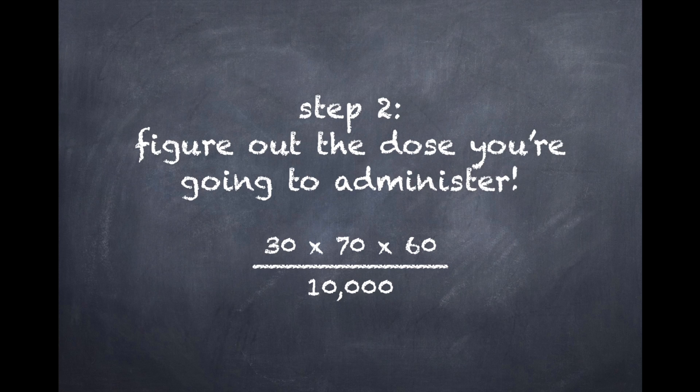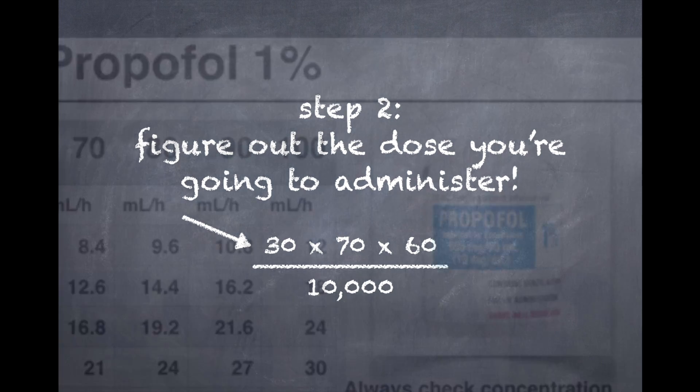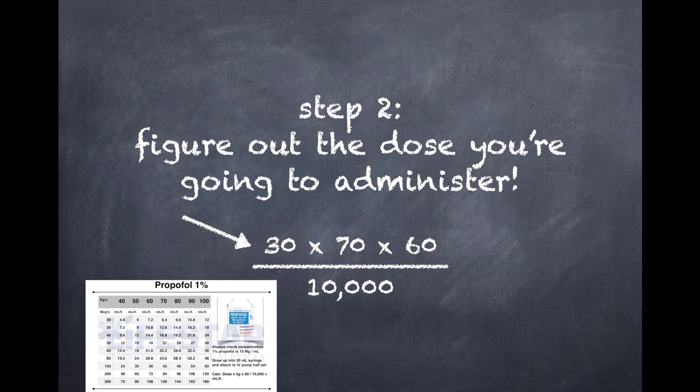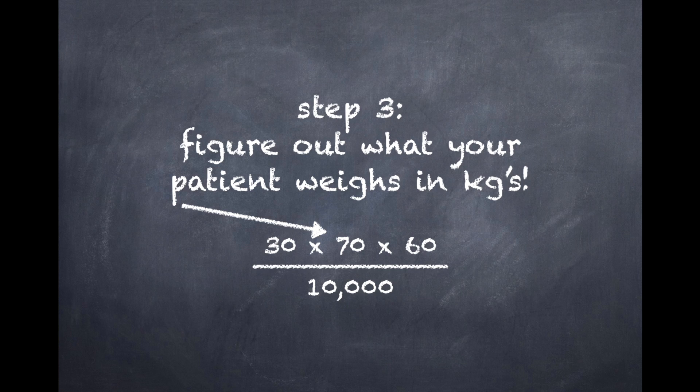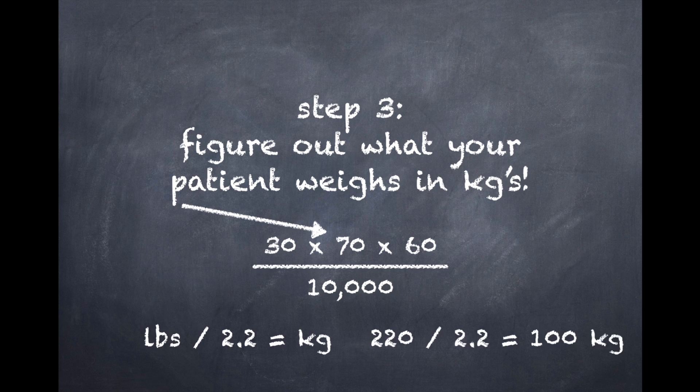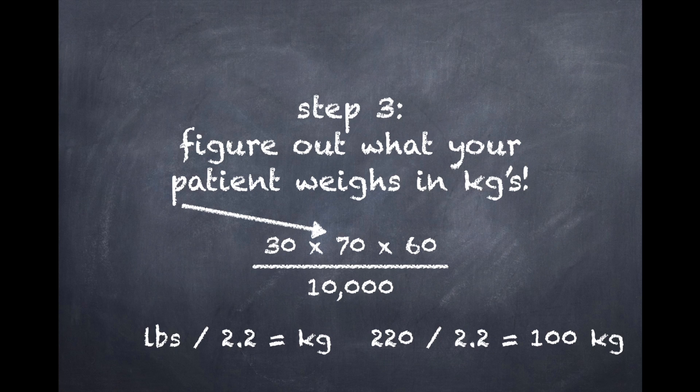So step two is going to be figure out the dose you're actually going to administer, because that's going to be our first number up on top. This is something you're either going to have to know very well or always consult a reference. It's dangerous to go by memory, so you always want to double check your doses. And then you have to figure out how much your patient actually weighs in kilograms. Most people know how to do this, but in case you're wondering, however many pounds they weigh, divide that by 2.2. That's going to give you your kilograms. So for instance, if you had a 220 pound patient, divide that by 2.2, that patient is 100 kilograms.